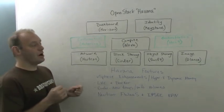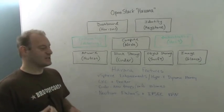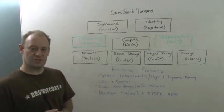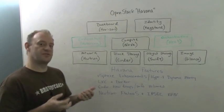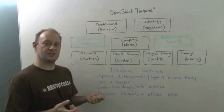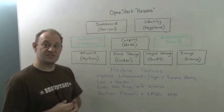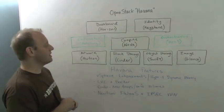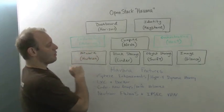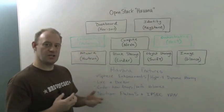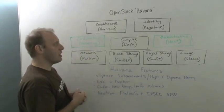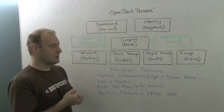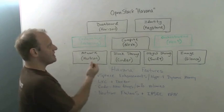In the next month or so is the OpenStack Havana release. What is different between Grizzly, the previous release, and OpenStack Havana? Well, what I've drawn out here is the projects that are contained within OpenStack.